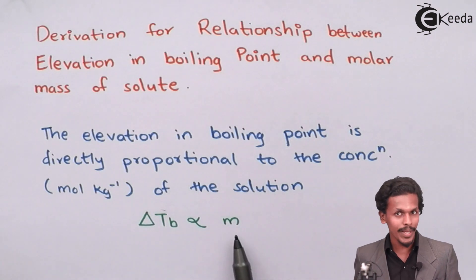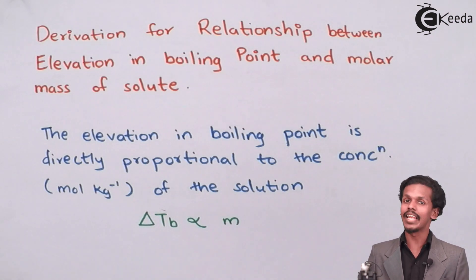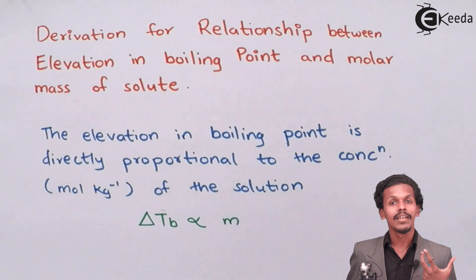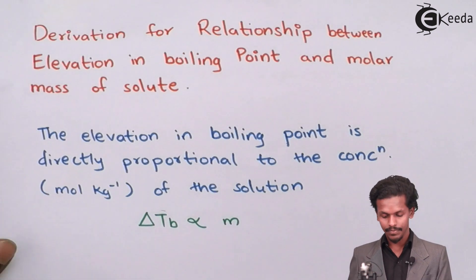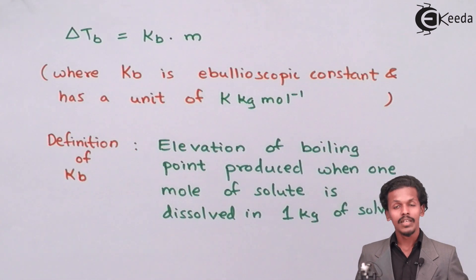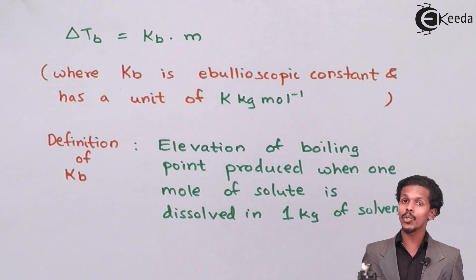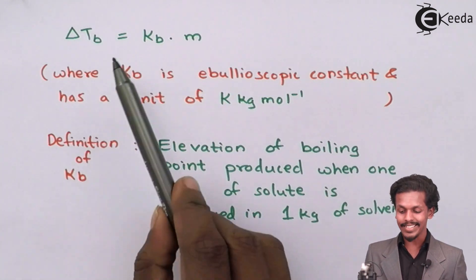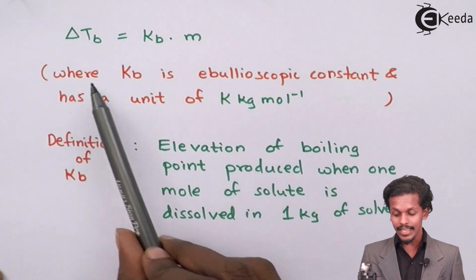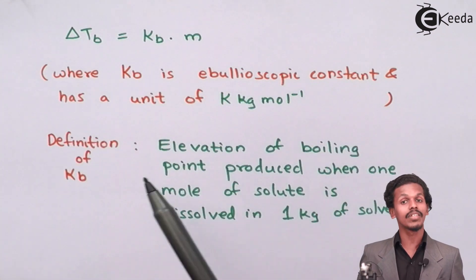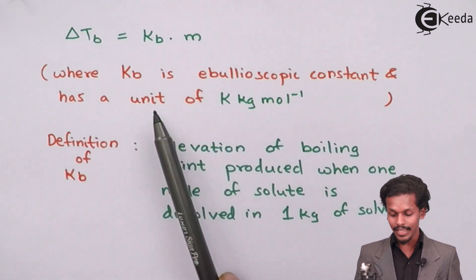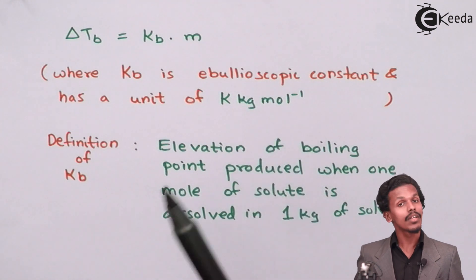Therefore, delta Tb is directly proportional to m, where delta Tb is elevation in boiling point and small m is molality of the solution. By equating it we get a constant Kb, which is the ebullioscopic constant, also known as molal elevation constant or boiling constant. The unit of Kb is kelvin kg per mole.